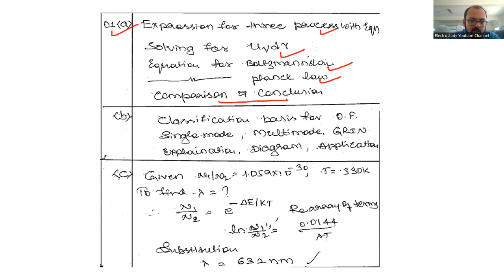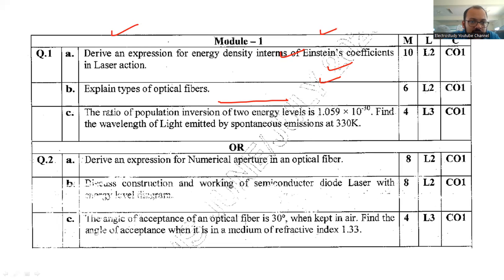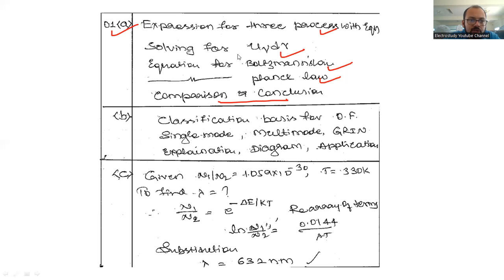The second question was explain the types of optical fiber. Here you are expected to write the following points: classification, single mode, multi mode, and GRIN. You are expected to write the explanation, diagram, and applications. That is the condition for question B, 1B.